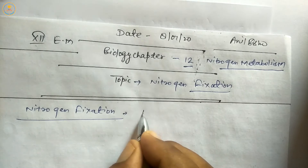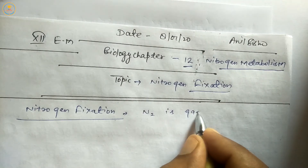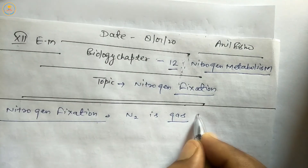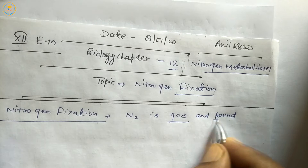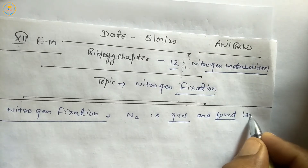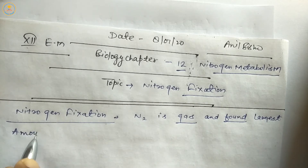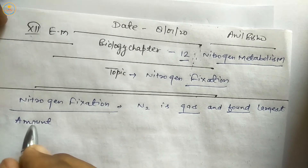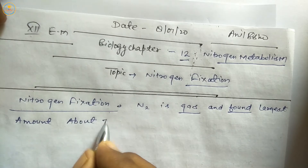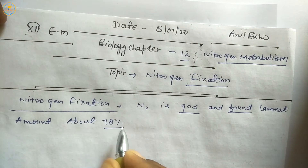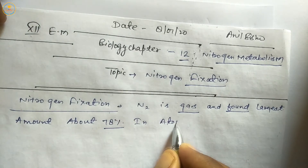Students, nitrogen is a gas first and found in the largest amount in the atmosphere — about 78%.